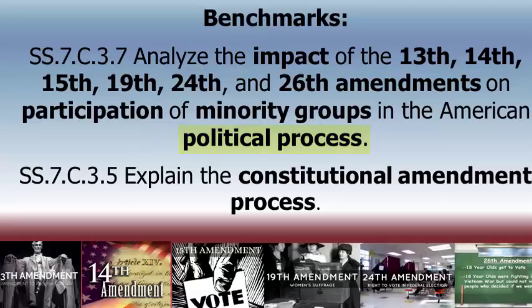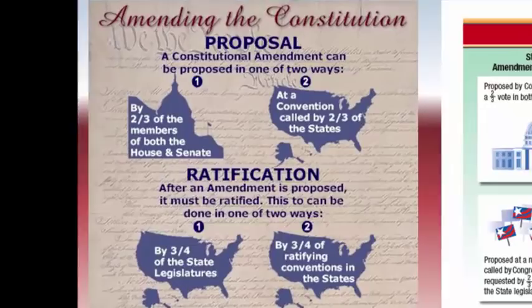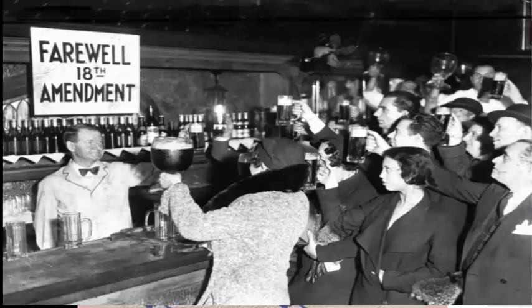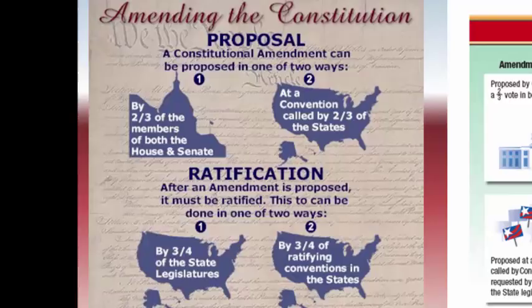We're going to take a quick look at how amendments are created. There are two parts: the first part is proposing the amendment, and this is done by a two-thirds vote of both houses of Congress. Now technically the states can propose amendments via state conventions, but this has only happened once in US history with the 21st amendment, which repealed the 18th amendment that made alcohol illegal.